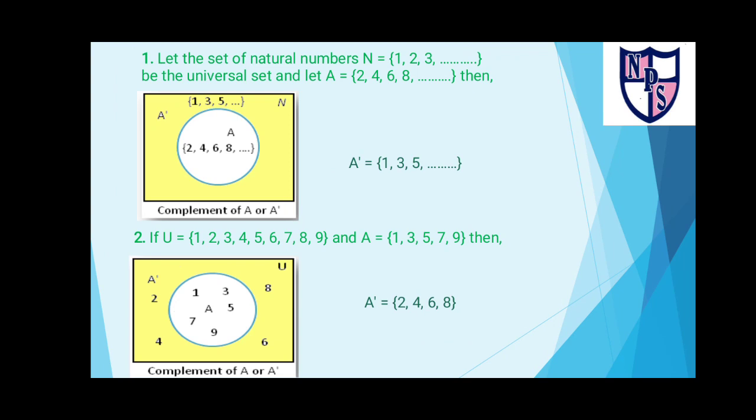Similarly in the second example, U is a set containing elements 1 to 9 and A is a set which has elements 1, 3, 5, 7, and 9, or you can say that A is the set of odd numbers between 0 to 10. The shaded region of the rectangle is the complement of set A.